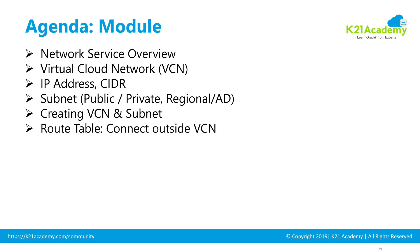Then we'll talk about route tables. A route table helps machines communicate with any service outside the VCN. Outside the VCN could mean a machine talking to the internet using an internet gateway, or connecting machines outside the VCN to on-premise, or connecting to Oracle cloud services like object storage for backup and restore. That's all about route tables.